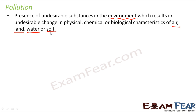If any undesirable substance is present in a component of the environment, it will bring some changes in that component. For example, if there are some undesirable chemicals present in the air, the composition of the air will get changed — so we say the air is polluted. Similarly, if you put some poisonous chemical in water, the chemical composition of water gets changed and the water becomes polluted. So pollution is always the presence of an undesirable substance in the environment.